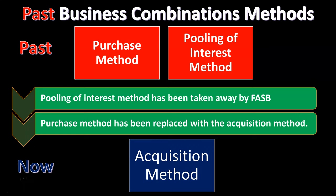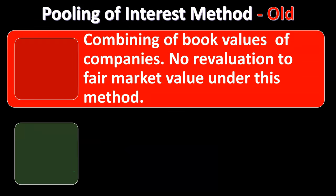When we talk about business combinations, we're generally talking about the external expansion of the business. A business can expand internally or externally, but we're typically talking about external expansion, and we're going to be using the acquisition method for the business combinations related to it.